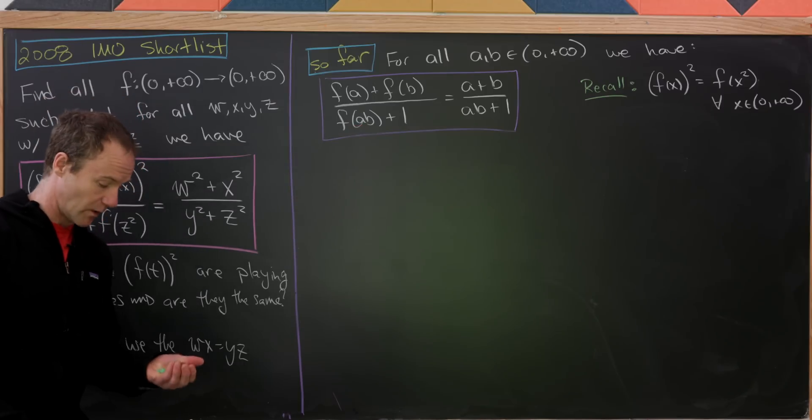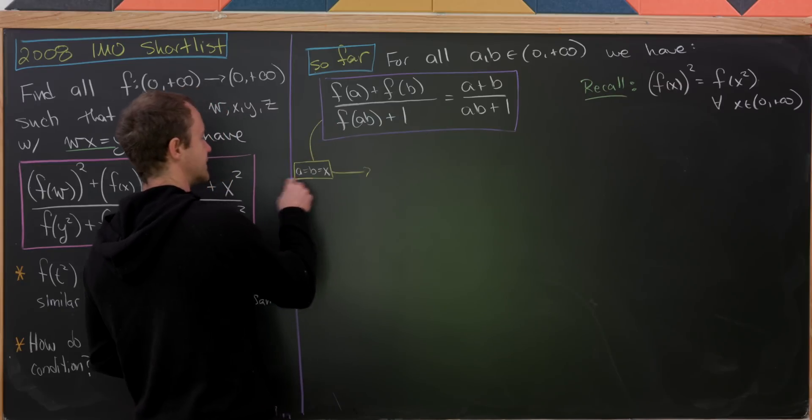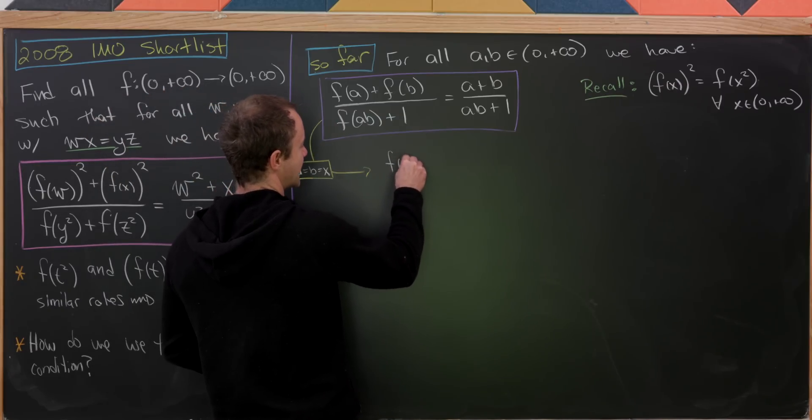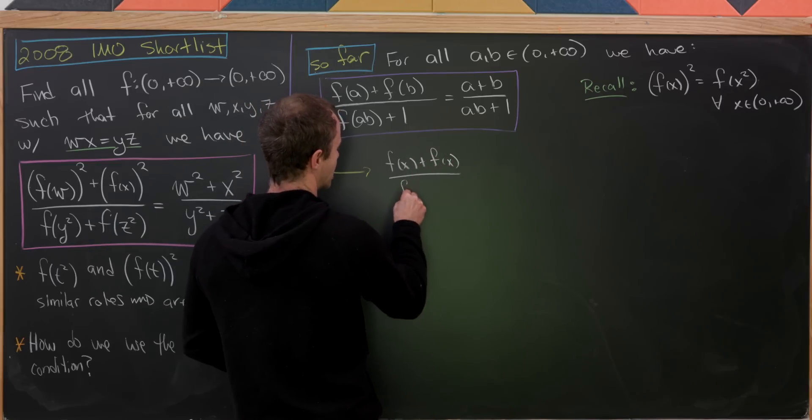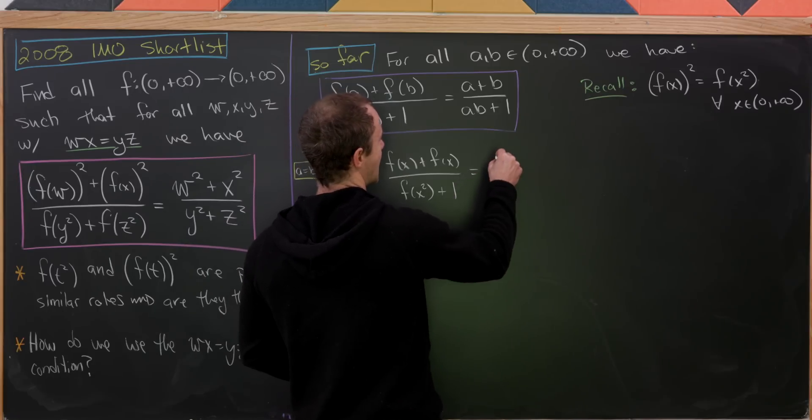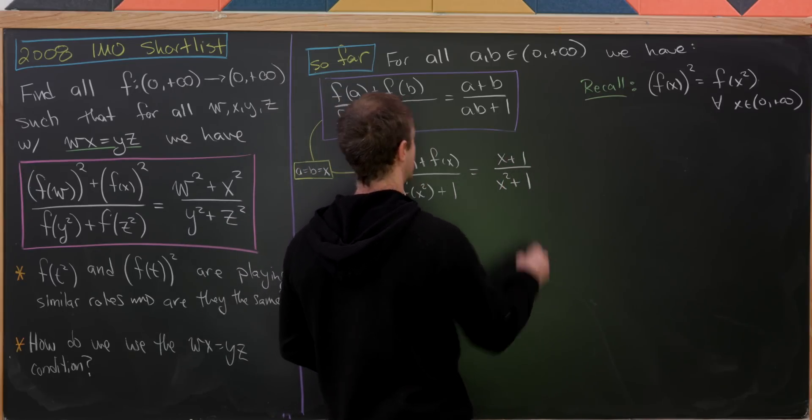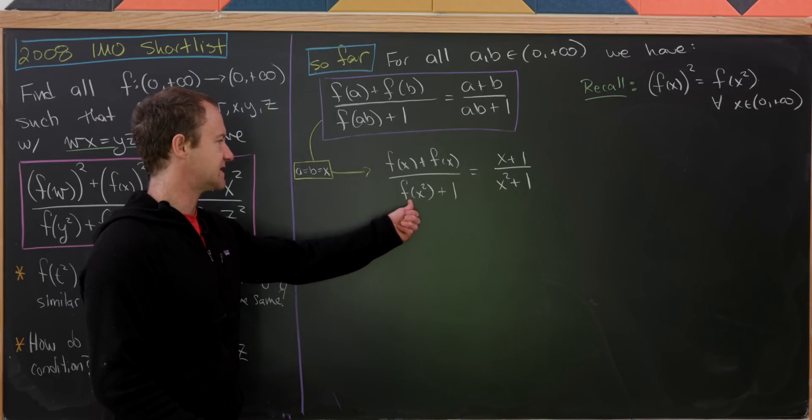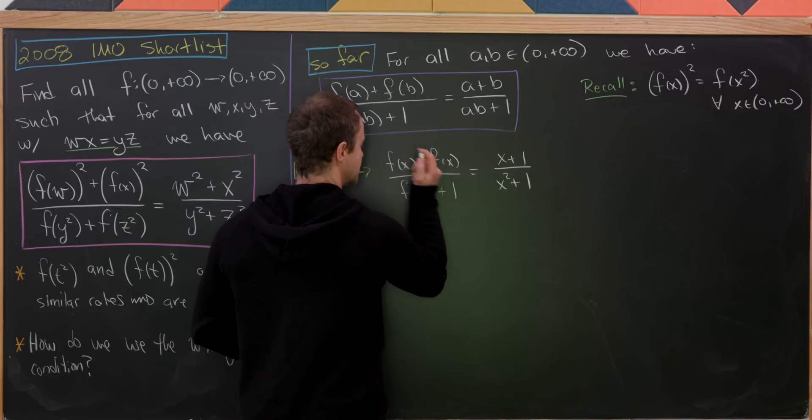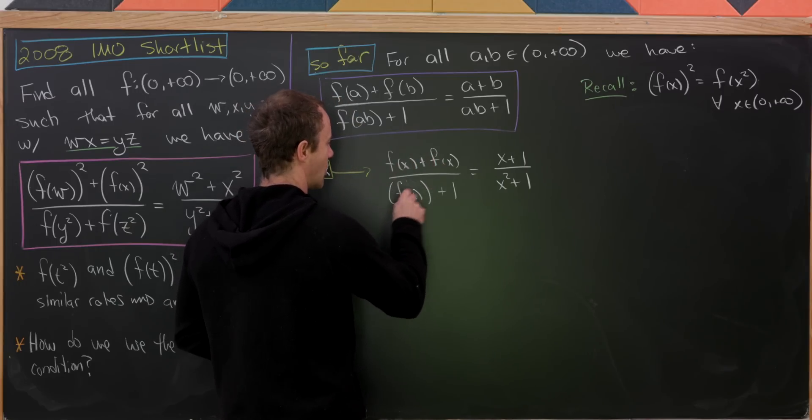That'll give us f(x²) here. So setting a equals b equals x will give us f(x) plus f(x) over f(x²) plus 1, and this is now going to be equal to x plus x over x² plus 1. But notice that this f(x²) can be rewritten using that over there. So let's do that. So this can be rewritten as f(x)².